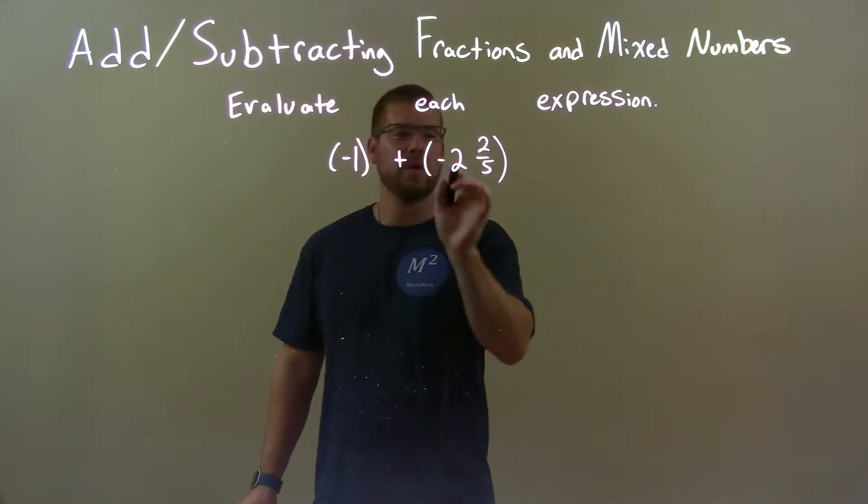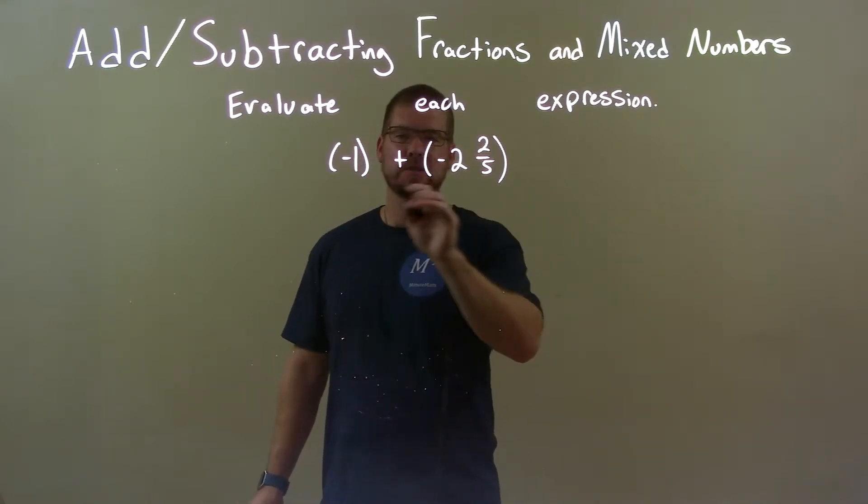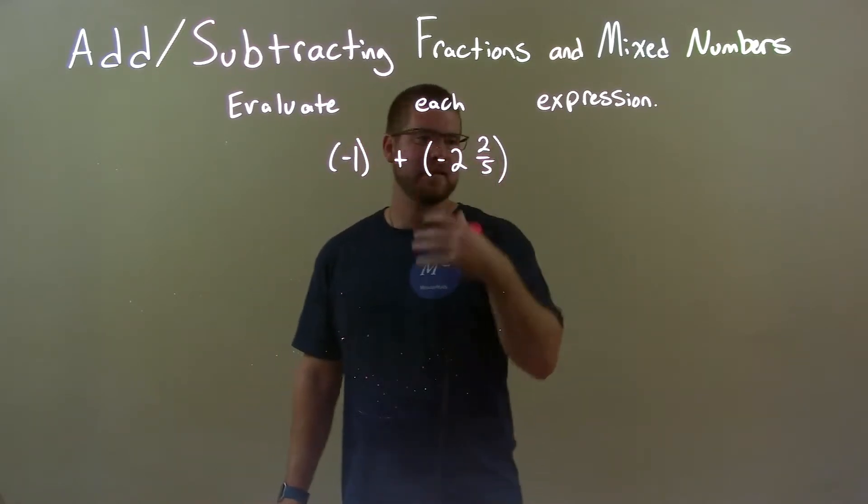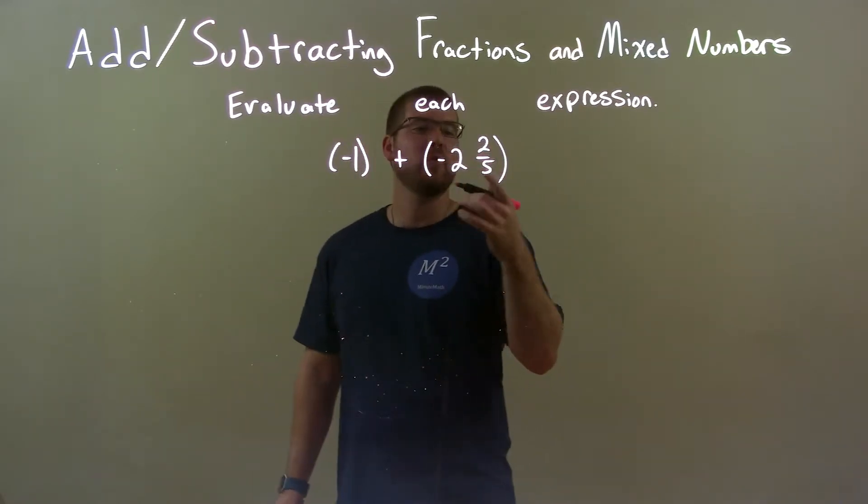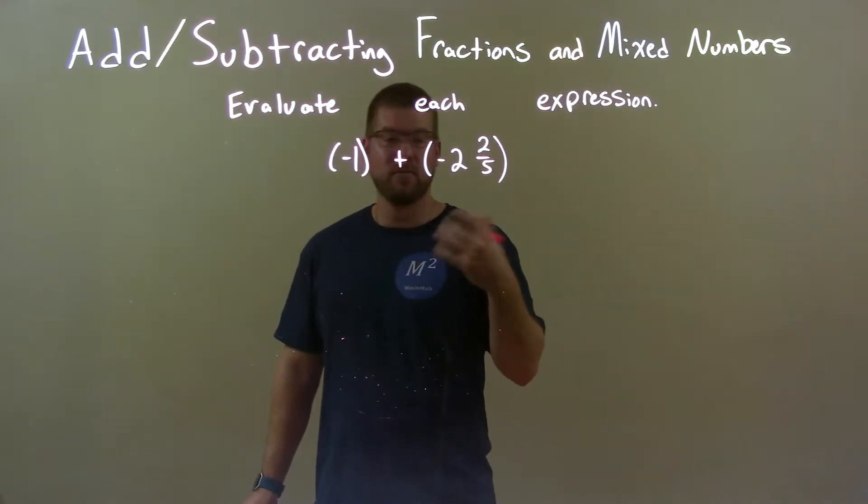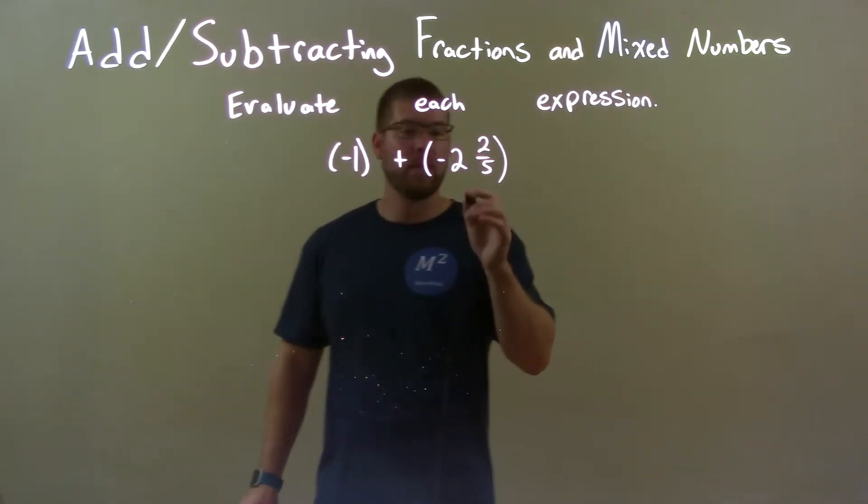But, since we have our whole numbers here, what we can do is actually quickly add these two together, right? If you think of it like negative 2.4 plus a negative 1 is negative 3.4, right? So, that's really what we're going to do here.